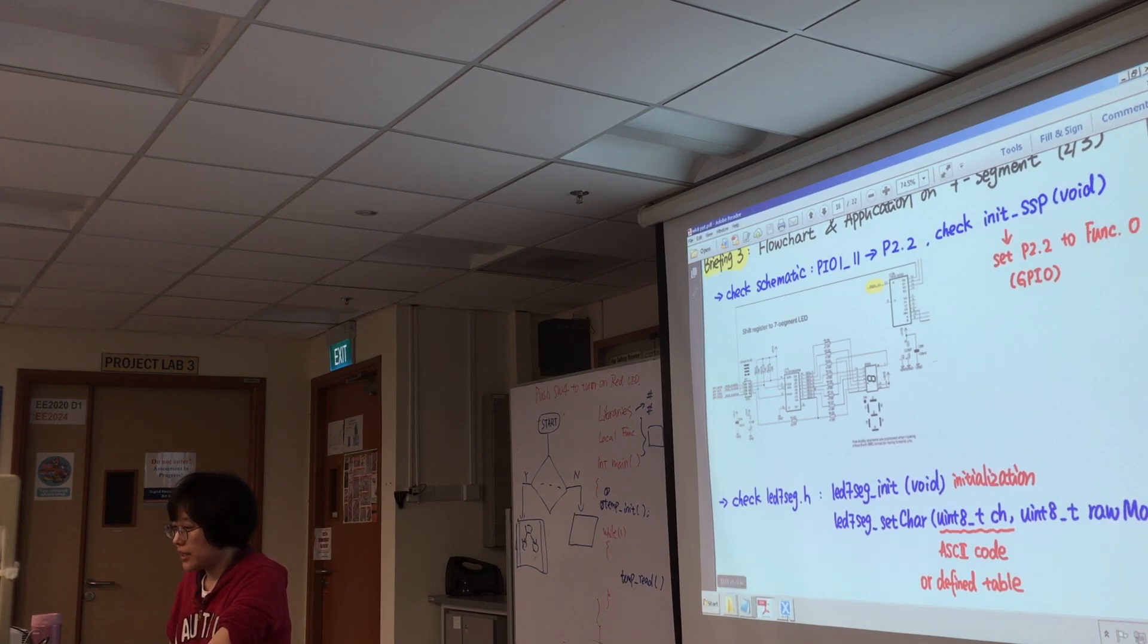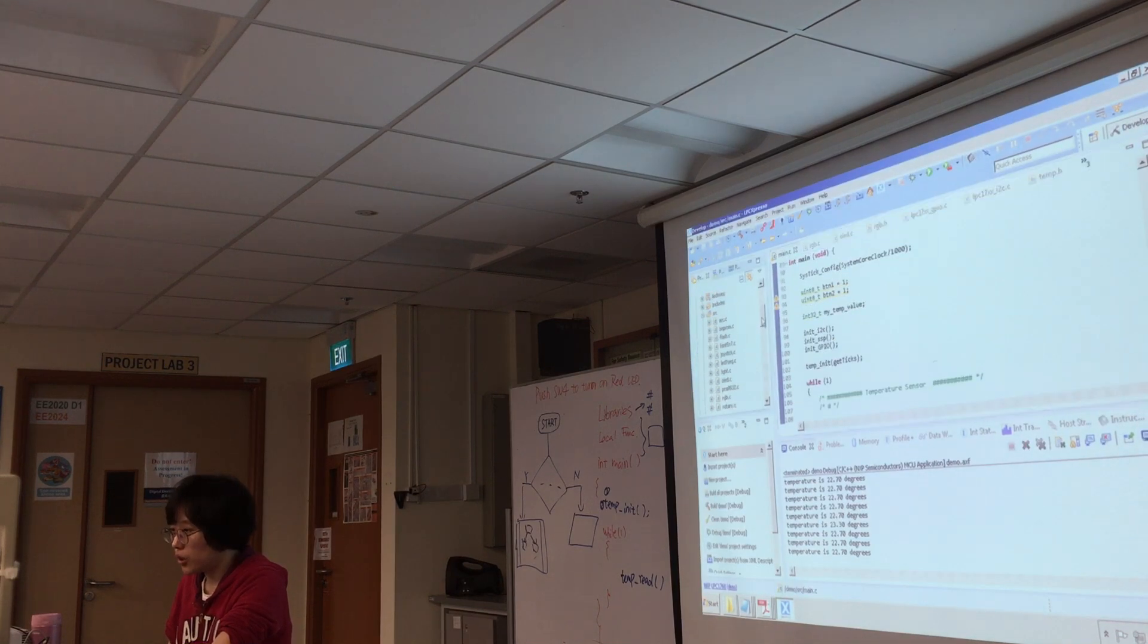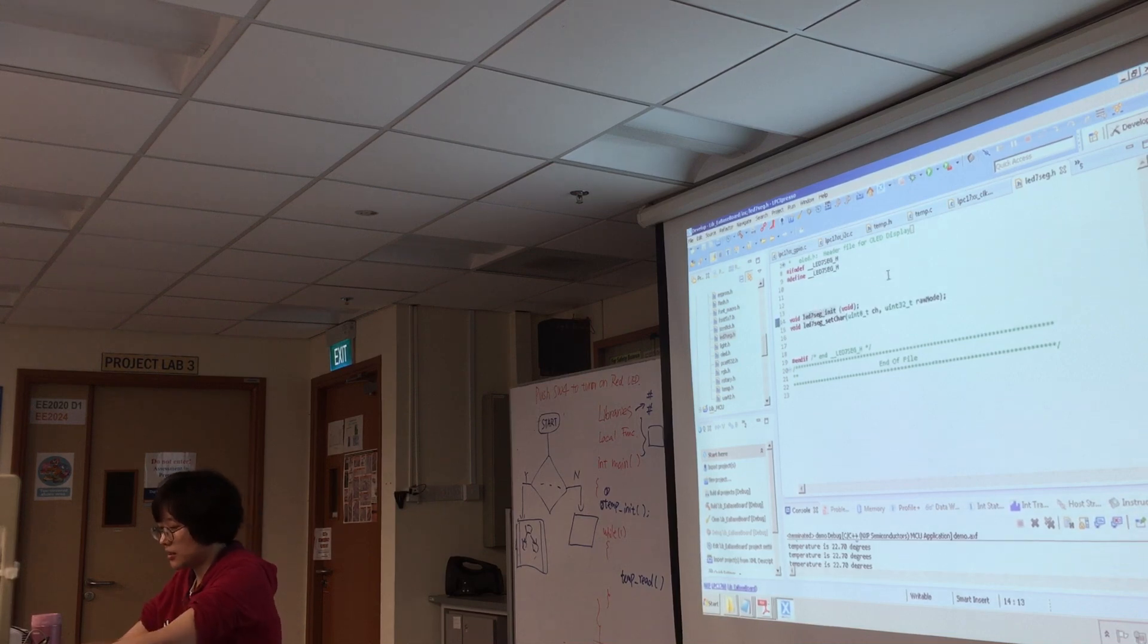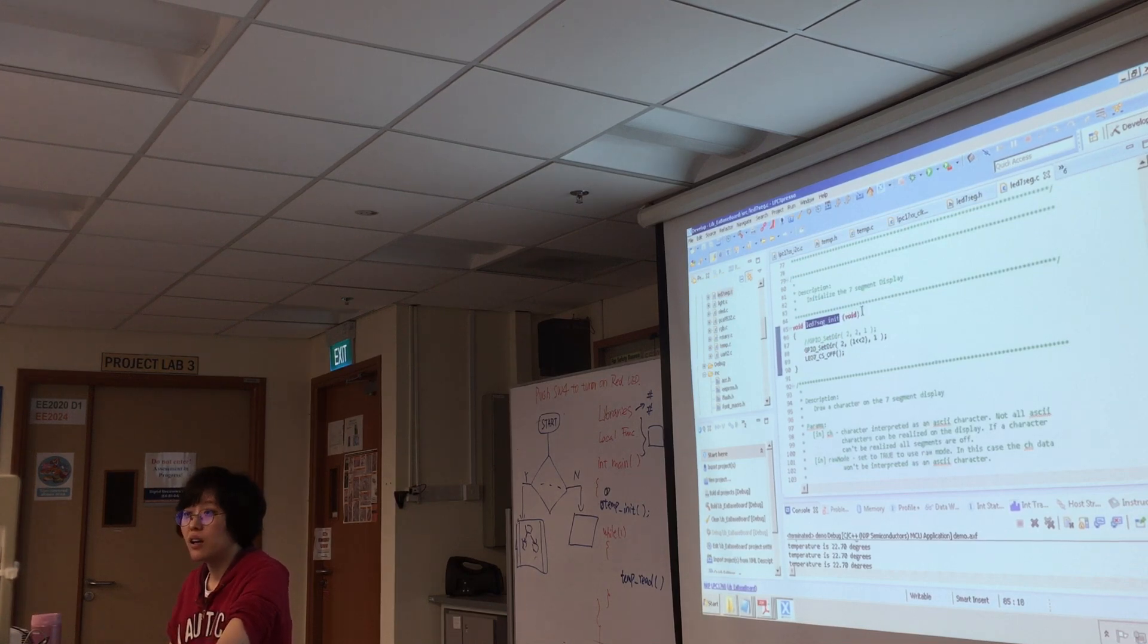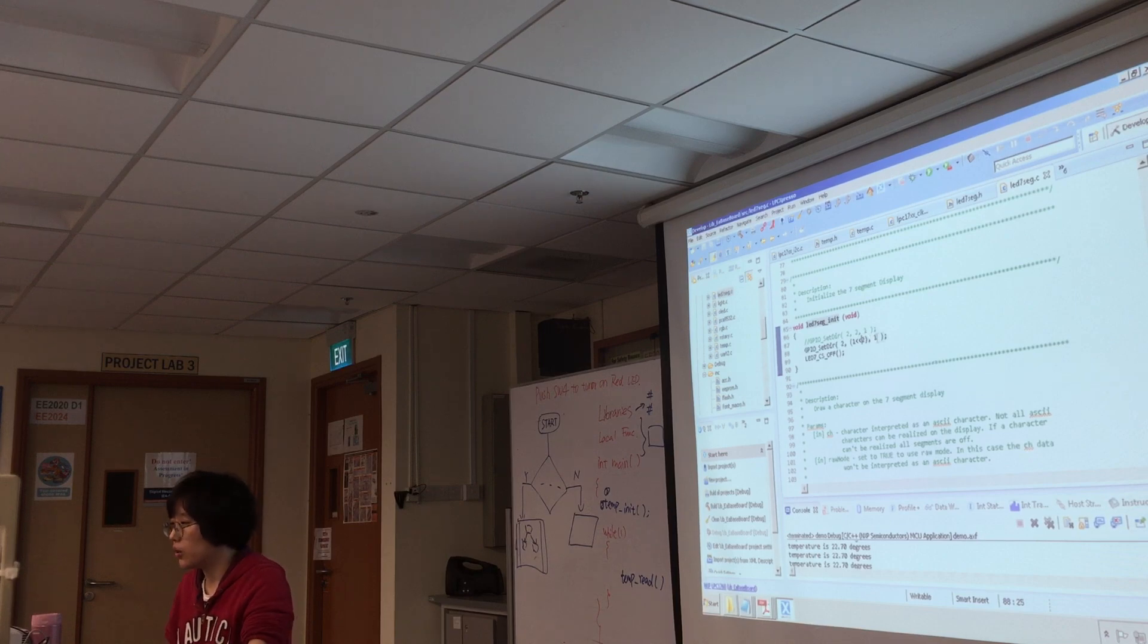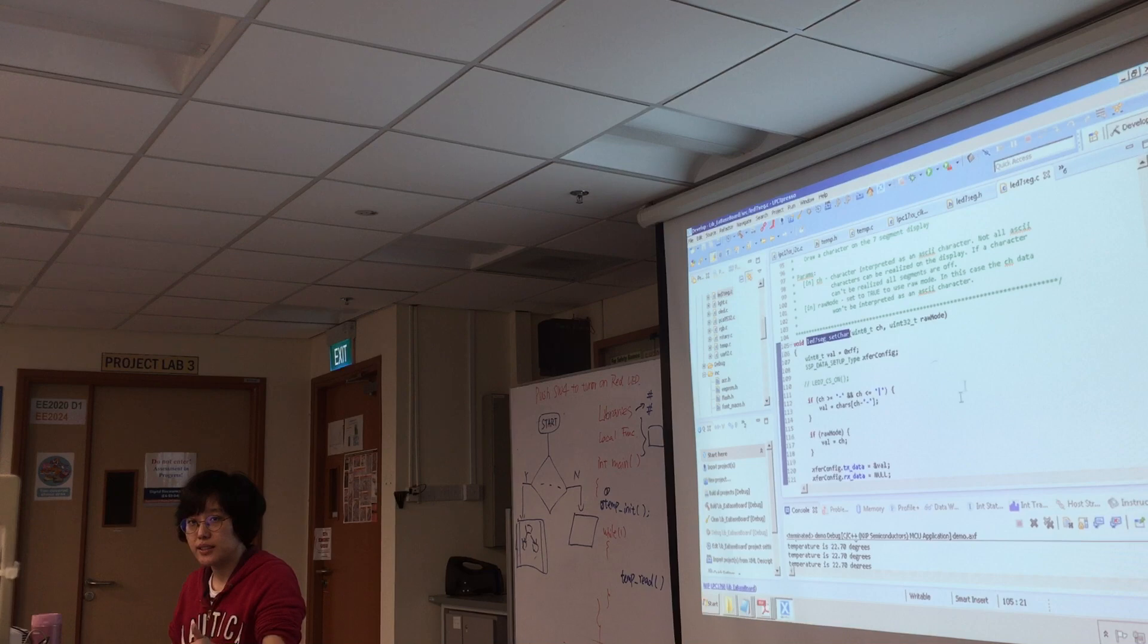So same thing here. You go into the seven segment header. These are the two functions you can use. This one, initialization. You don't need to pass anything. So you see that you are actually setting that pin to Port 2 as GPIO output. And then this is a function to set character.